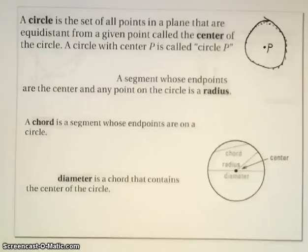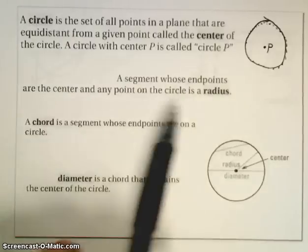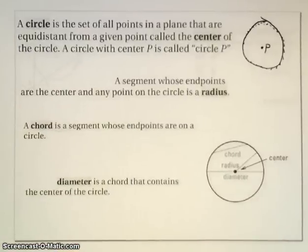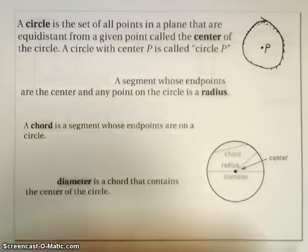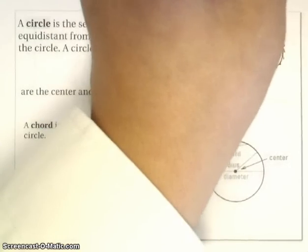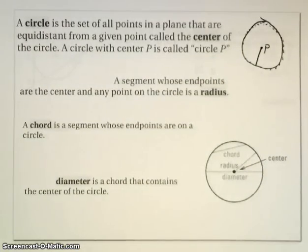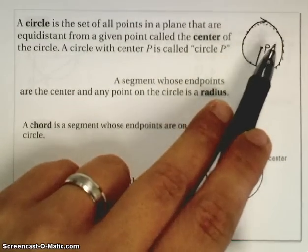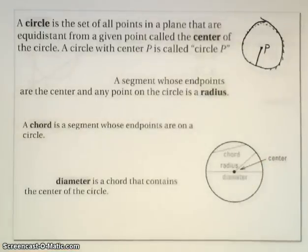A segment whose endpoints are the center and any point in the circle is called its radius. So this example right here is one of the radii I could draw. I could draw an infinite number of them, which would extend from the center to the edge of the circle.